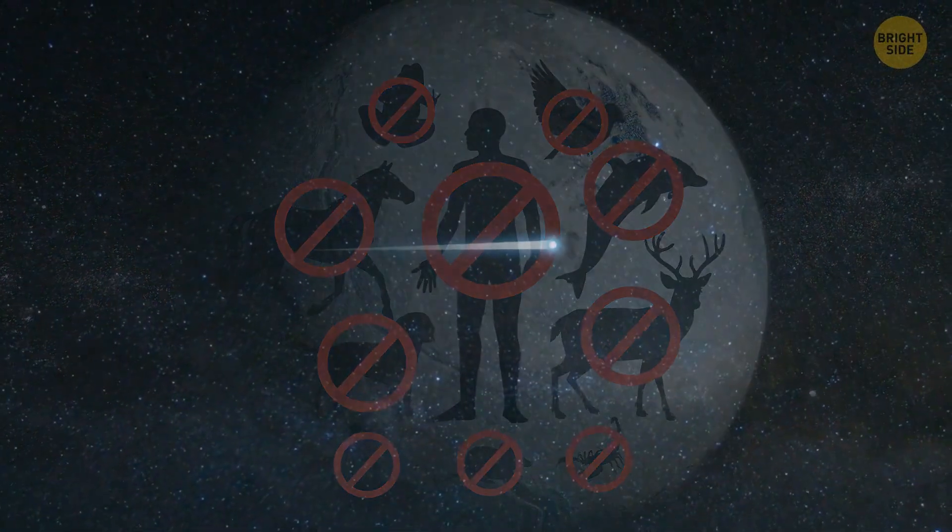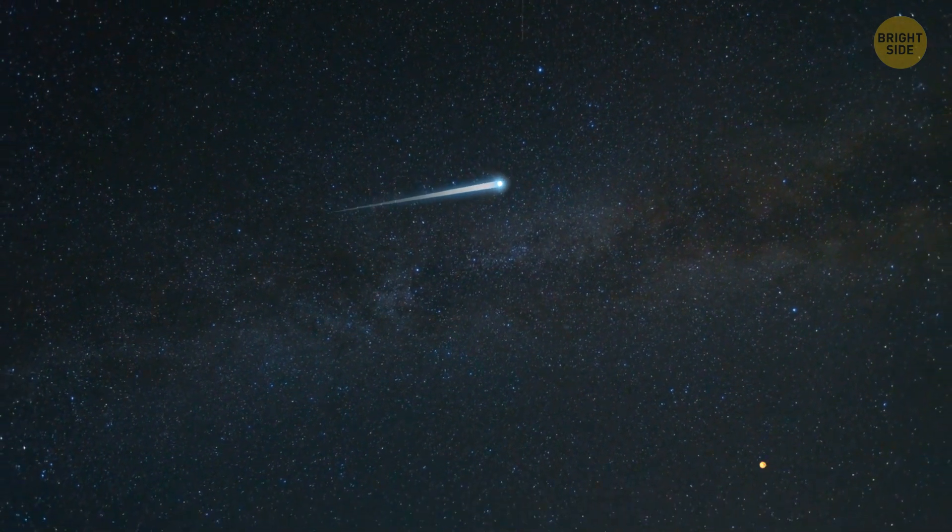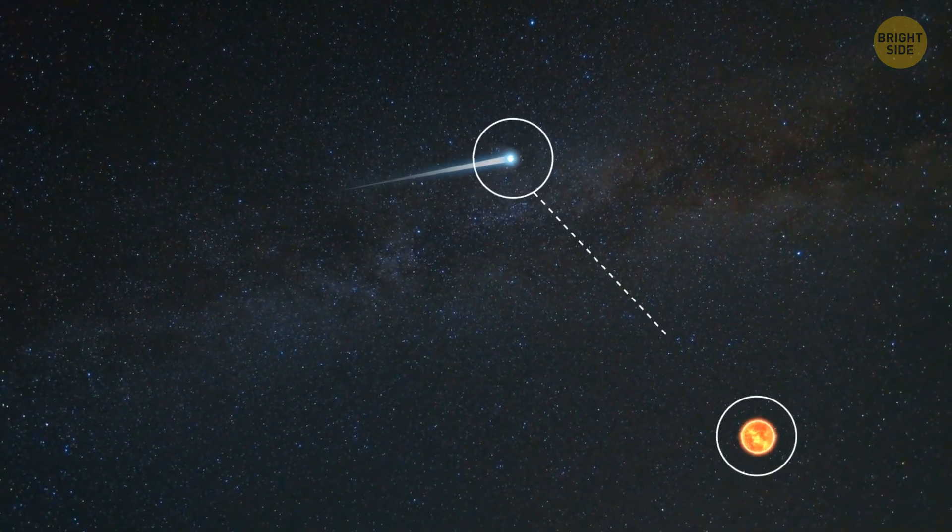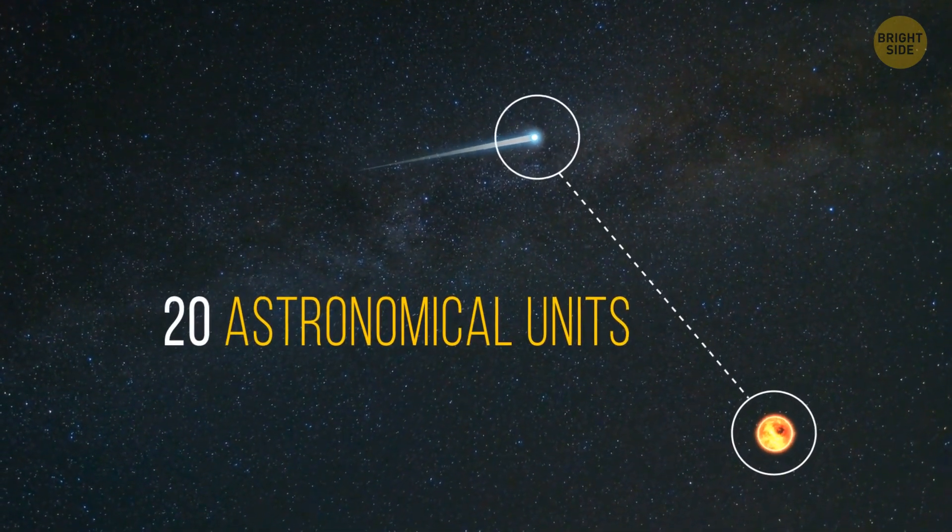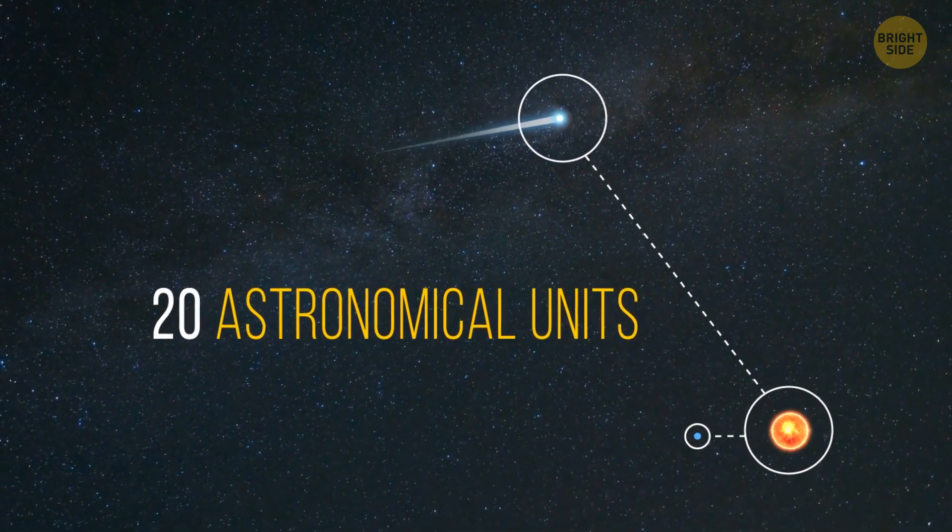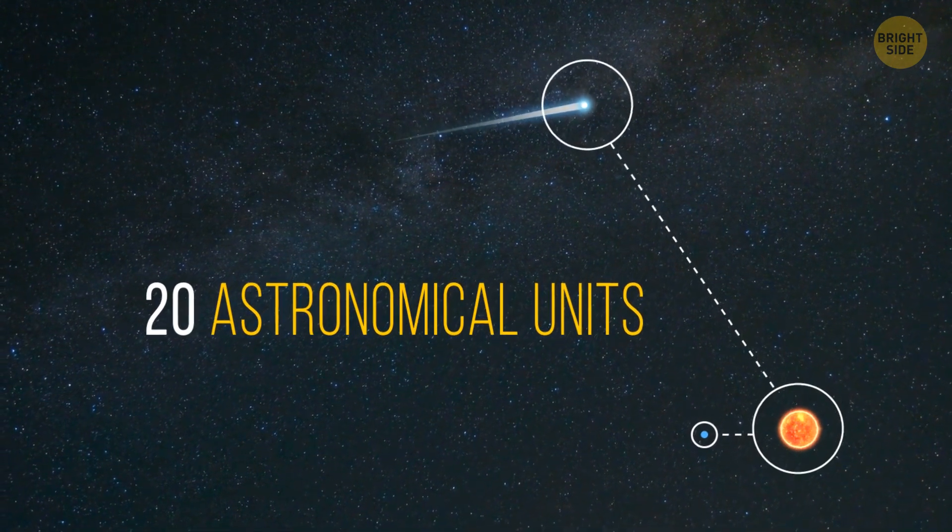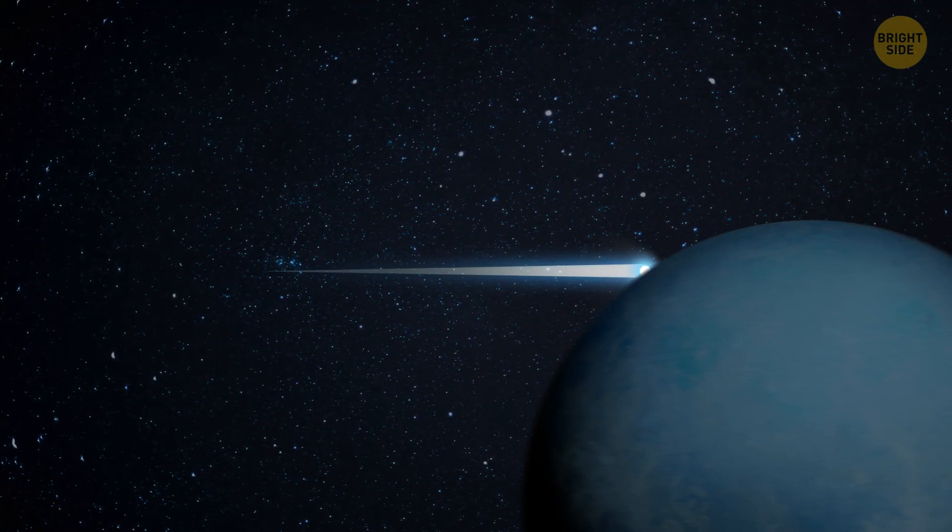Fortunately, Bernardinelli-Bernstein isn't going to approach Earth. Right now, the comet is about 20 astronomical units away from the sun. That's 20 times the distance from Earth to the sun. It means the comet will soon cross the orbit of Uranus.